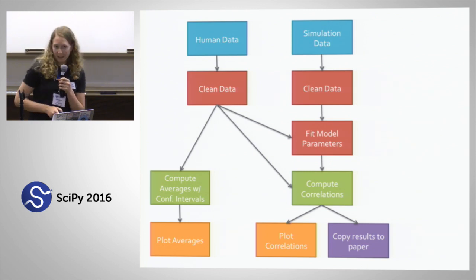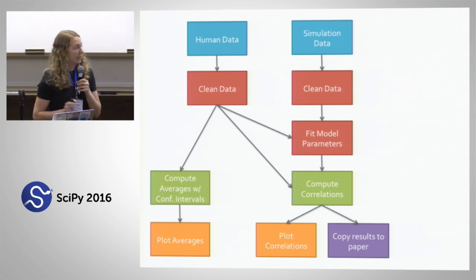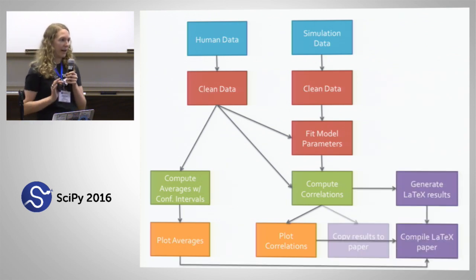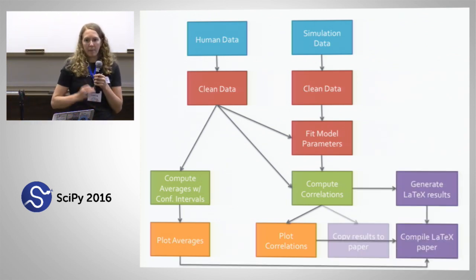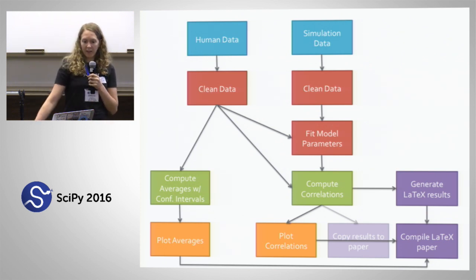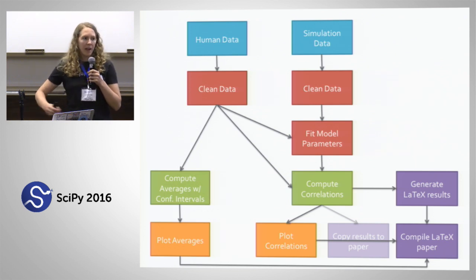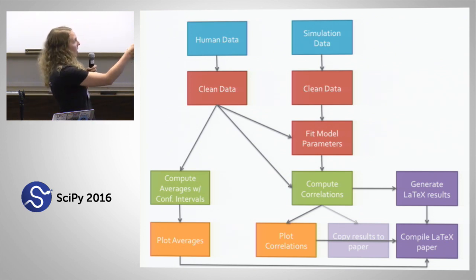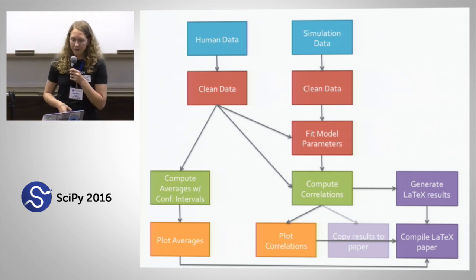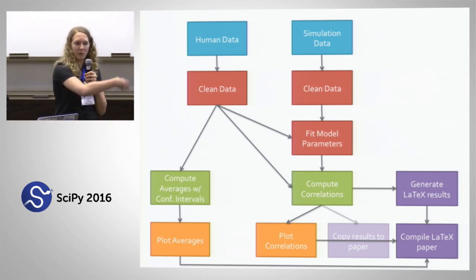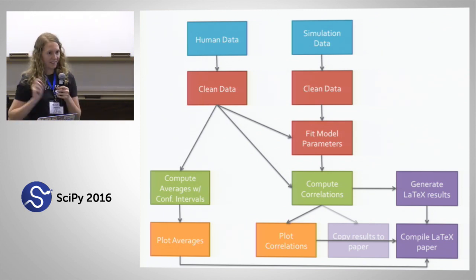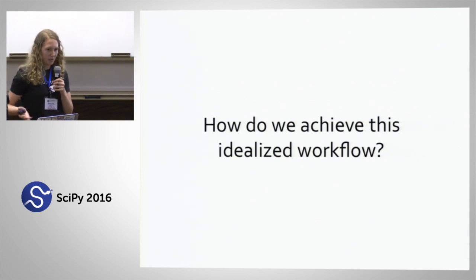This is an idealized analysis pipeline. Maybe even better than just copying results to the paper, we can automatically generate a file of our results. Maybe we're doing something in LaTeX, so we can include those results in our LaTeX file and then compile it to PDF. This gives us a pipeline all the way from our raw data down to the final finished publication product. Ideally we would be able to do this whole pipeline with one click or one command — so the question is how do we actually do that?